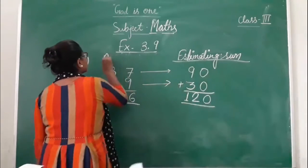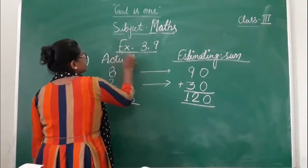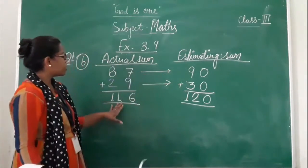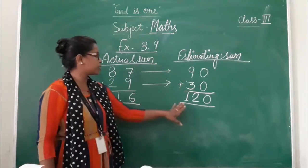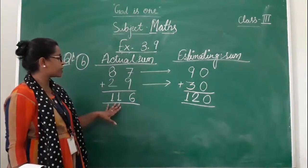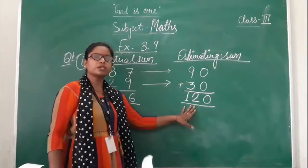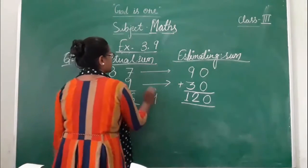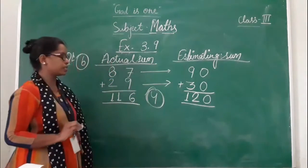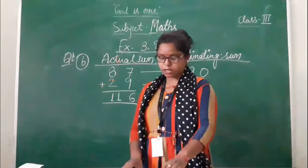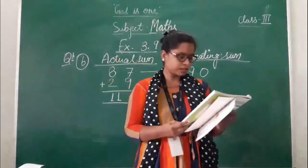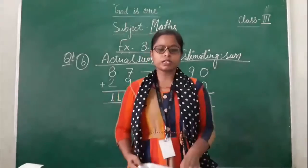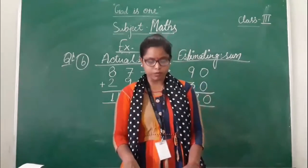The estimating sum is 120 and the actual sum is 116. The difference between these two numbers is 4. This is clear, students. In the book, the space given is for the actual sum and the estimating sum. You will work in your copy. I will send you the PDF, then you will work in the book.